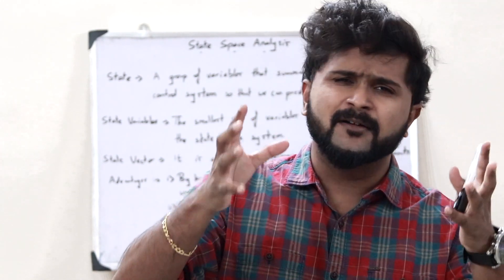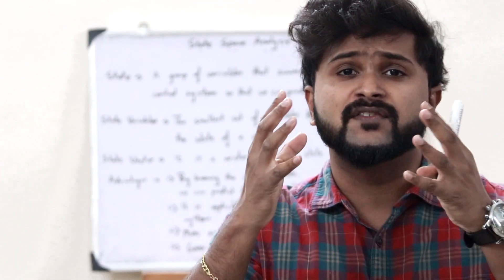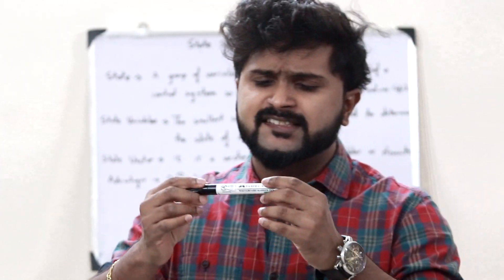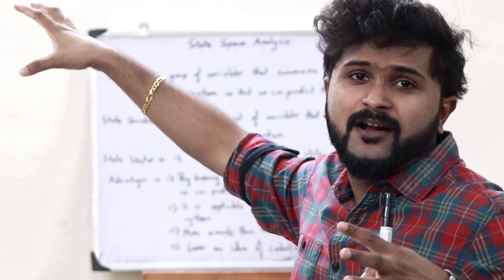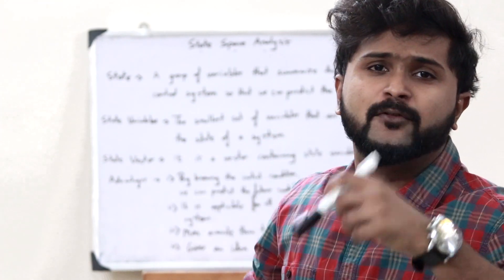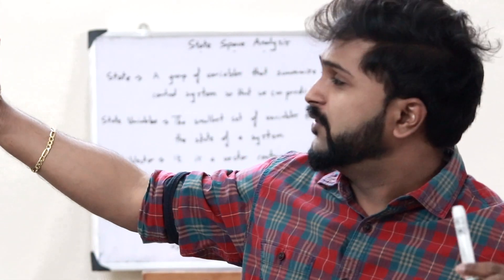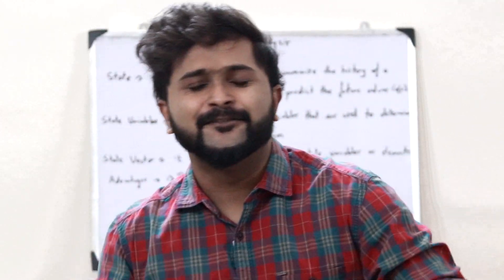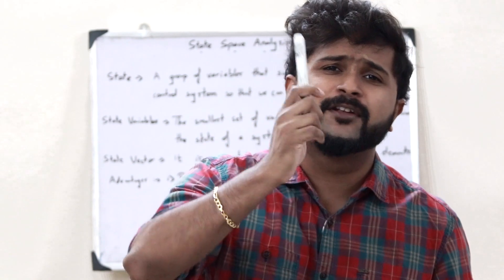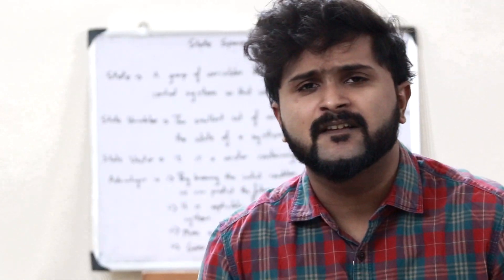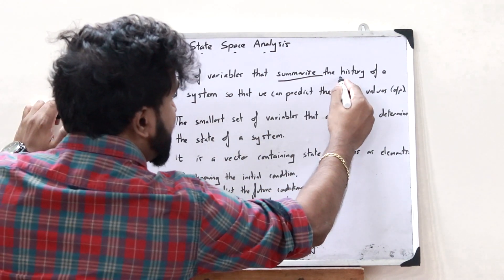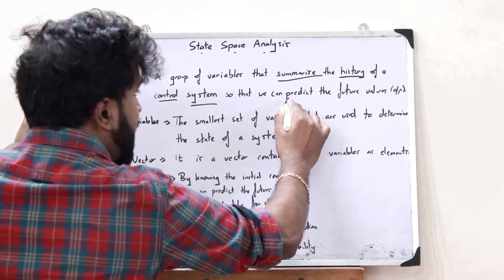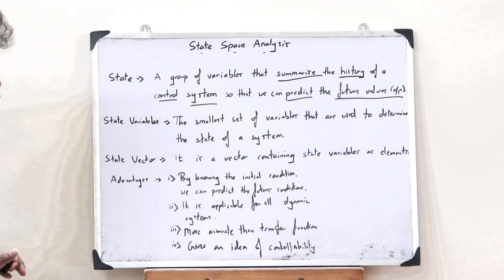For this purpose, we need certain terms. The first term is what you refer to as a state. A state is actually a set of variables that tells us the history of a particular control system. Just by analyzing the state, we can understand the history and predict the future outputs. A state is a group of variables that summarizes the history of a particular control system so that we can predict the future values or the future output values.